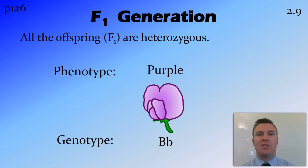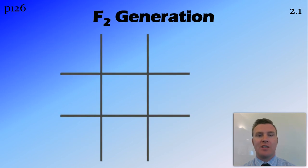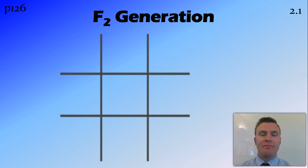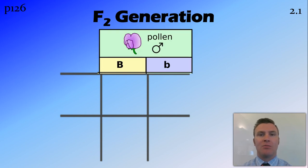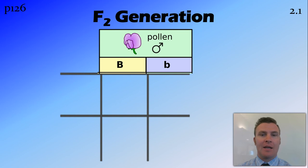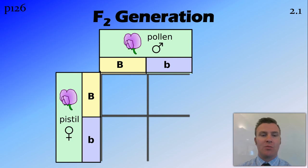That's the F1 generation, or the filial 1 generation — filial just means family — coming from the P generation. What we're going to do now is look at the F1 generation and what happens if you breed two individuals from that generation to create the F2 generation. So again we're going to use a Punnett square, remembering that the F1 generation was big B, little b. We put the male at the top — big B, little b — being the heterozygous purple flower. And down the side we'll have big B, little b for the female as well.